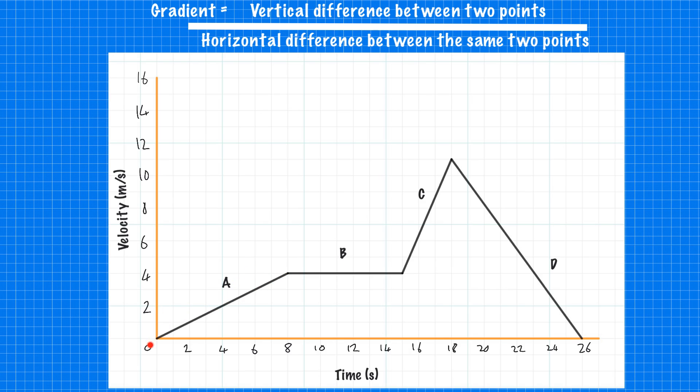You can see section A here, we've got a straight line going upwards, which means it's a constant rate of acceleration. And they accelerate from zero metres per second to four metres per second in eight seconds. Section B, they stay at a constant velocity of four metres per second. Section C, they accelerate more sharply this time because we've got a steeper slope, up to eleven metres per second. And then for section D, they decelerate, they slow down to rest over the next few seconds.